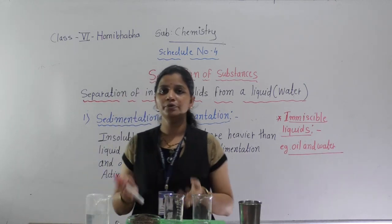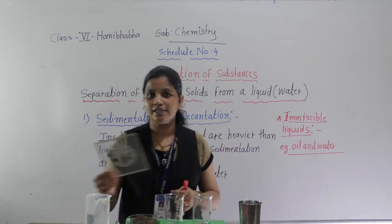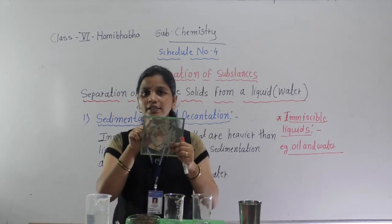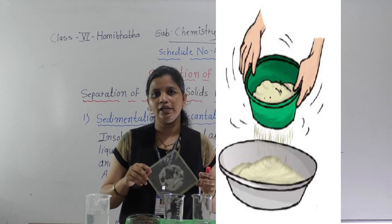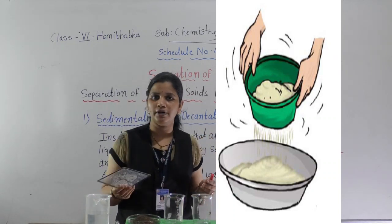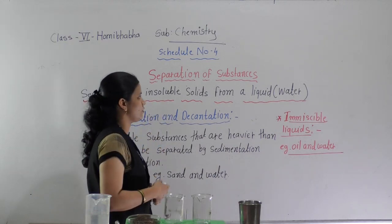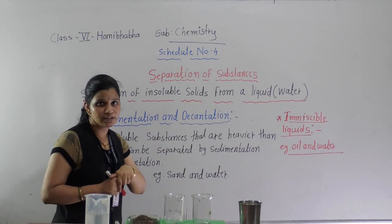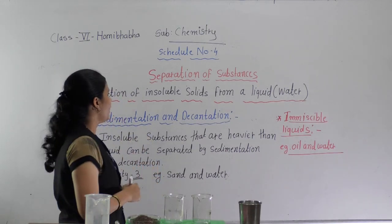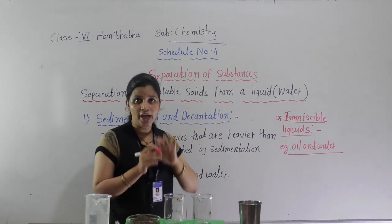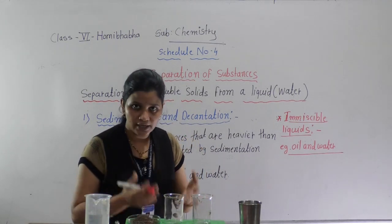Before this, we learned how to separate two solid substances and which methods to use — we discussed the sieving method, which has a net-like structure and is used to separate particles like pebbles from sand when size and shape are different. Now the next point is the separation of insoluble solids. Insoluble solids means those substances that are not dissolved in water — that is known as an insoluble substance. These insoluble solids we have to separate from a liquid, meaning water. Now, how to separate that?